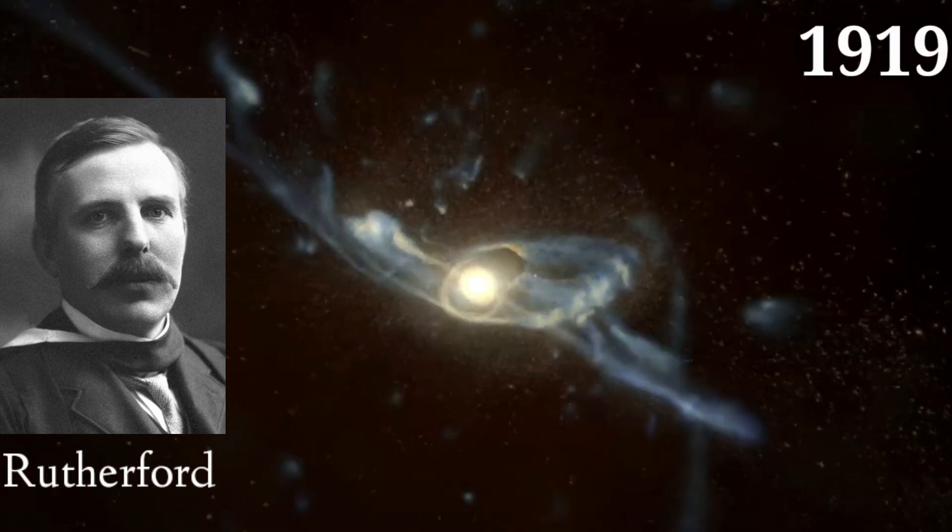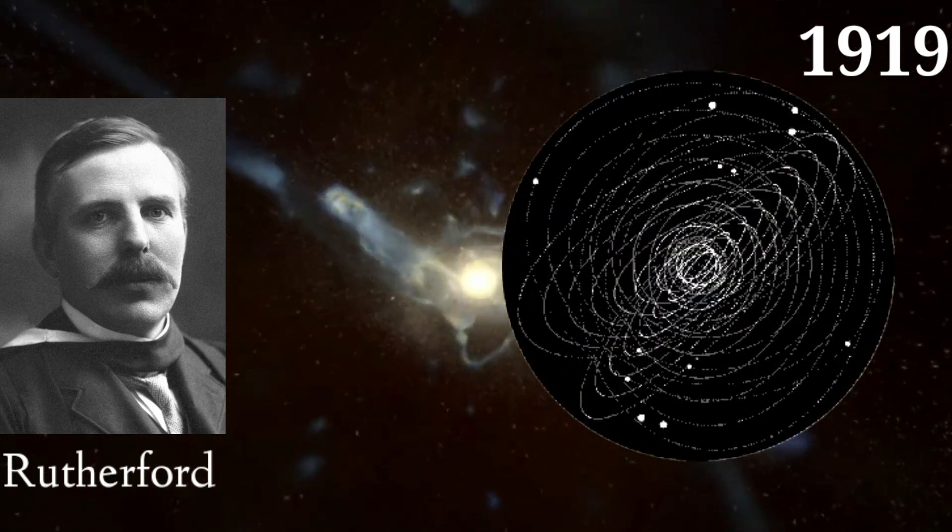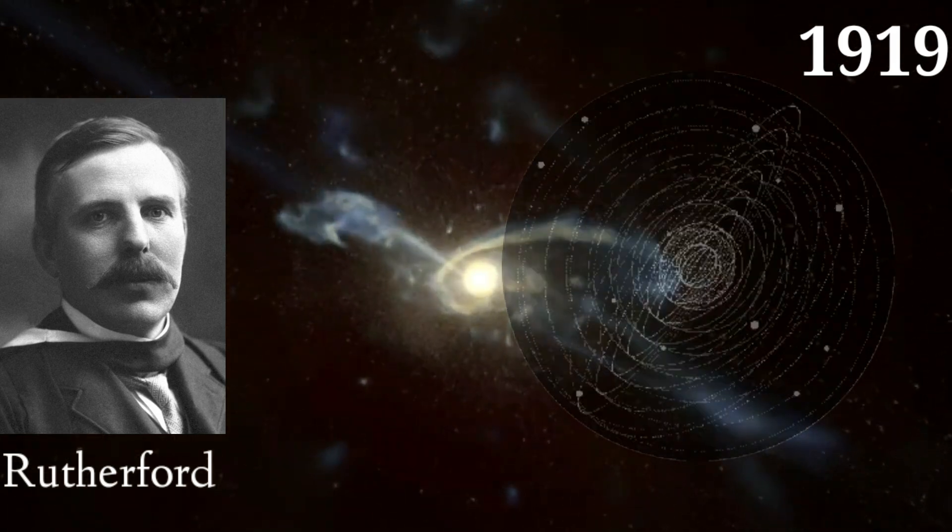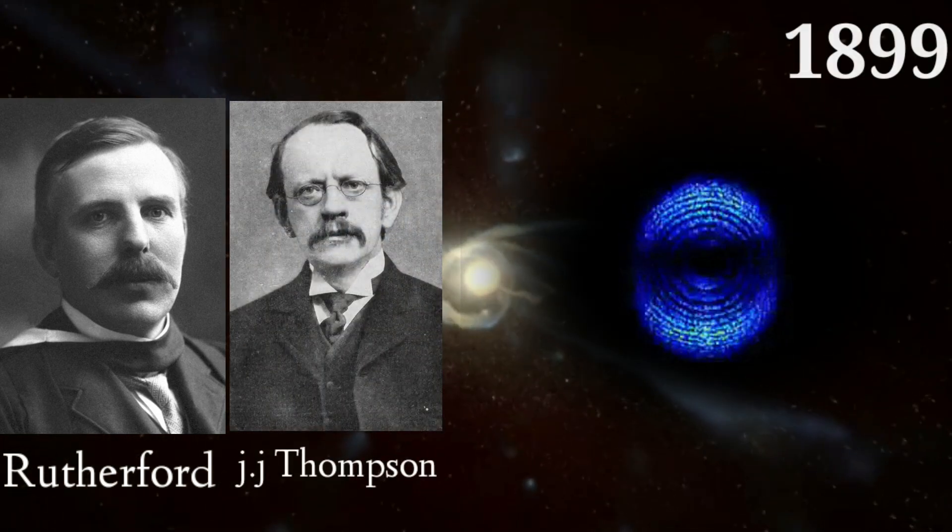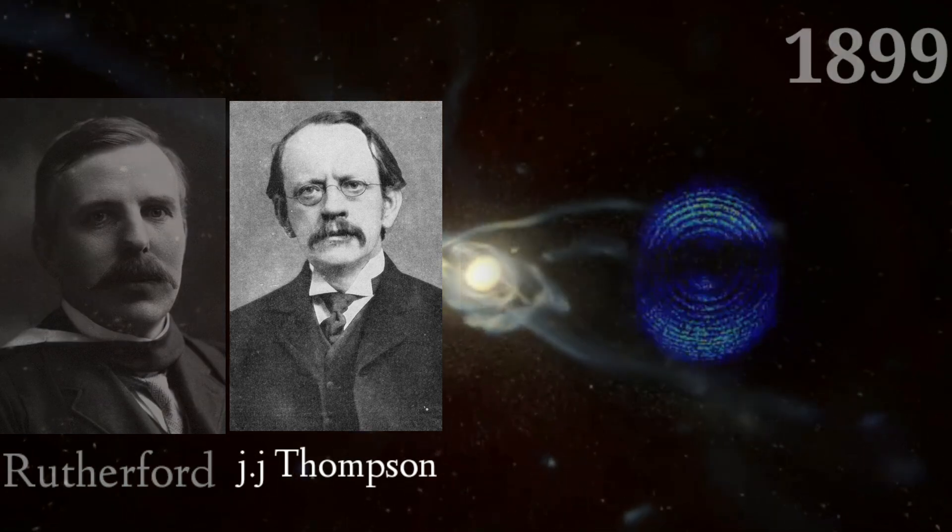Rutherford later, in 1919, discovered the protons by himself and believed that electrons, which were earlier discovered by JJ Thompson in 1899, orbit around the atomic nucleus.